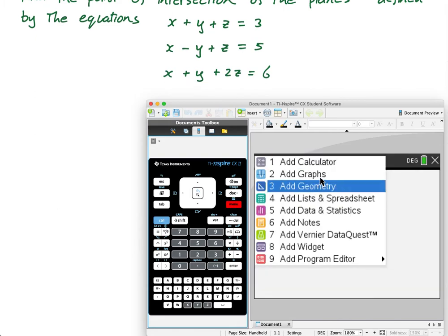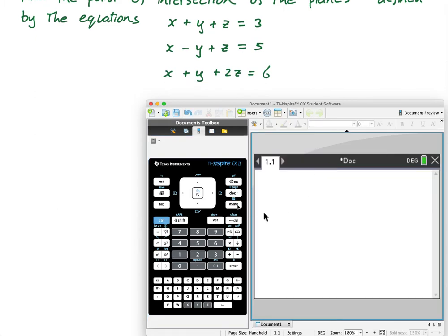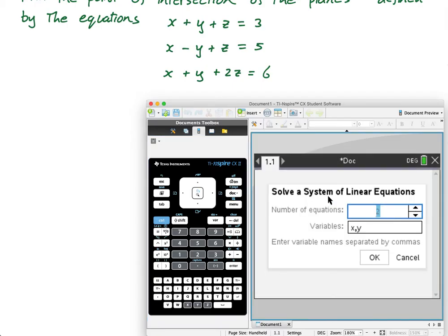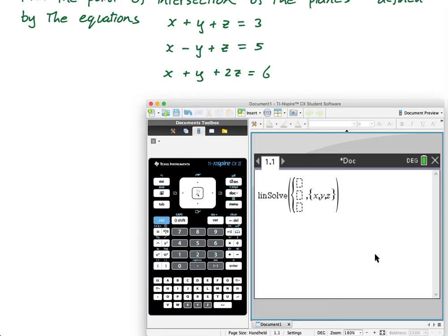Let's see. Menu. Add calculator. Menu. Algebra. Solve system of linear equations. Now I want three. Automatically gives me the z. And then I just type them in. X plus Y plus Z equals three. X minus Y plus Z equals five. And X plus Y plus two Z equals six. Press enter.